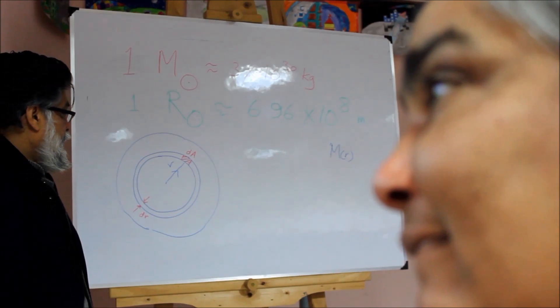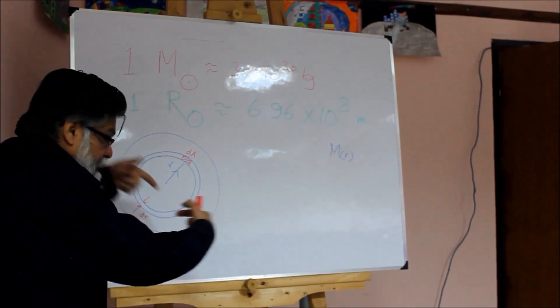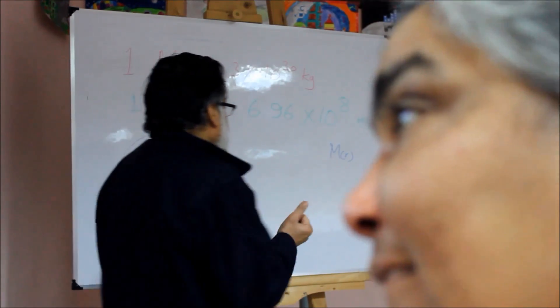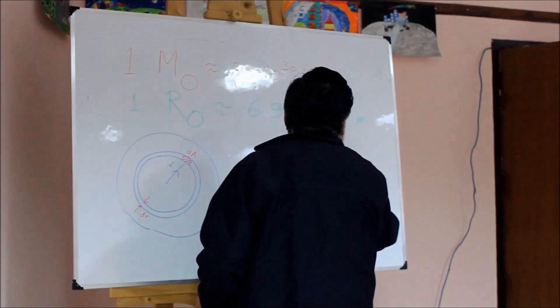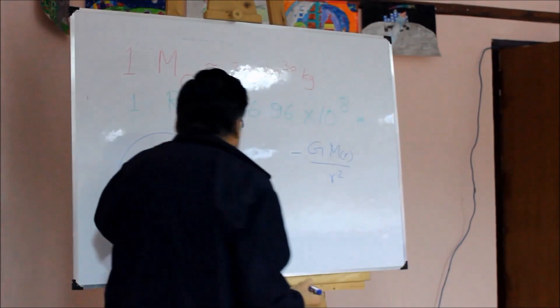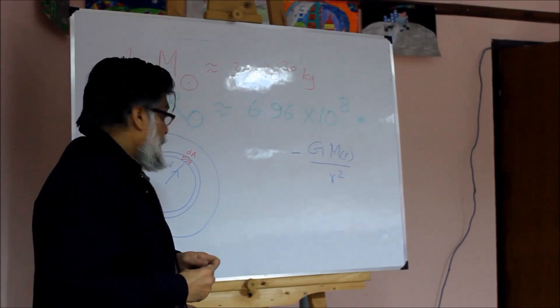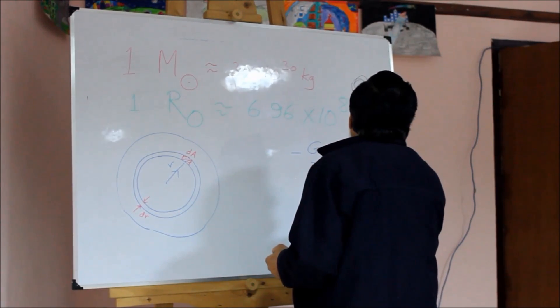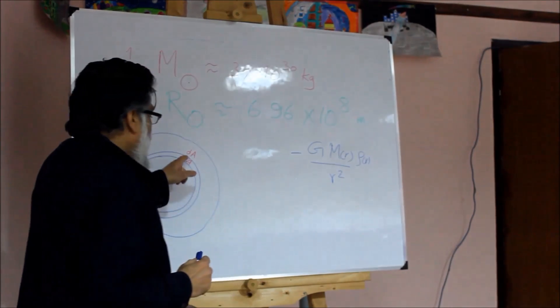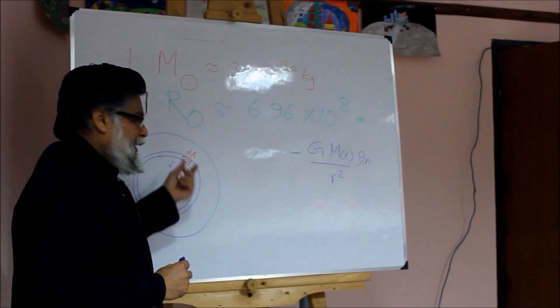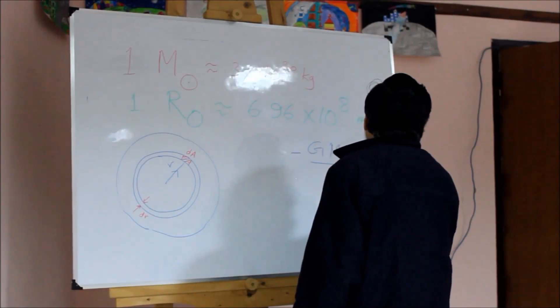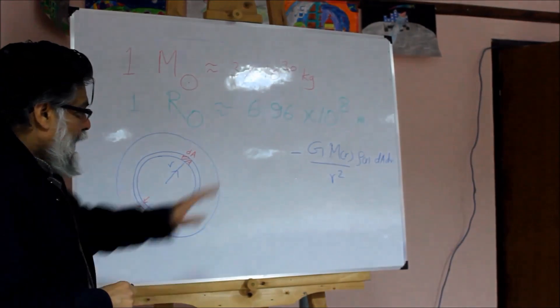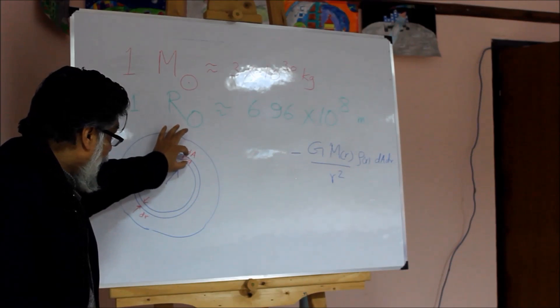How much is that force? The force, according to Newton's law, is inward directed, and the force will be -G × M(r)/r² multiplied by the mass of this element. Mass of the element - supposing you know the density as a function of r, so ρ(r), in general the density also depends upon r. So ρ(r) into the volume element, that is the mass. What is the volume? dA × dr. That is the gravitational force acting on this volume element. Negative because it is going inwards.